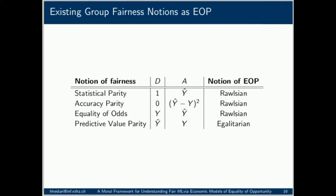With our framework, we can explicitly spell out the moral assumptions underlying existing notions of fairness for binary classification by viewing them as special cases of EOP. For instance, equality of odds can be thought of as an instance of Rawlsian EOP, which implicitly assumes that the true label appropriately summarizes what the decision subject can be held accountable for. Similarly, predictive value parity is an instance of luck egalitarian EOP and assumes that the predicted label or risk reflects an individual's effort-based utility. Our framework also allows us to interpret recent fairness impossibility results in a new light: different notions of fairness make very different assumptions about which subset of decision subjects deserve the same outcome, and usually only one, if any, is morally acceptable. Therefore, it is often unnecessary from a moral standpoint to ask for multiple fairness notions to be satisfied simultaneously.